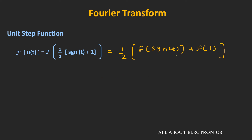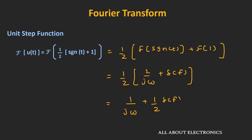We know that the Fourier transform of the signum function is equal to 2 divided by jω, while the Fourier transform of 1 is equal to δ(f). So from this we can write the Fourier transform of the unit step function as 1 divided by jω plus 1/2 times δ(f), or we can write it as 1 divided by j times 2πf plus 1/2 times δ(f). So this is the Fourier transform of the unit step function. In this way, using the signum function, we can find the Fourier transform of the unit step function.